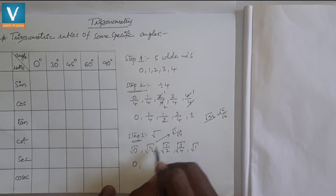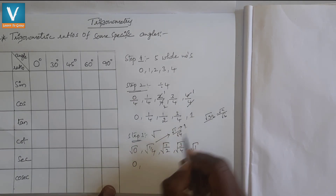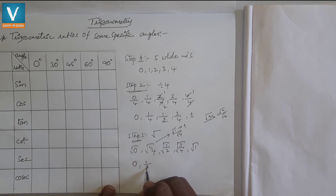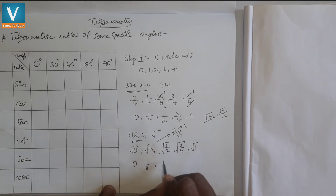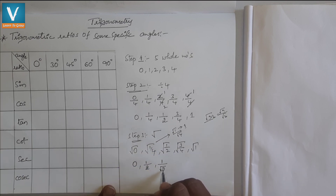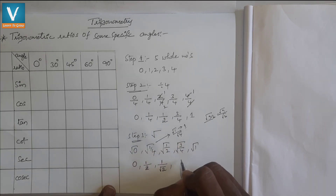So √(1/4) = 1/2. Now √(1/2) = √1/√2. Since √1 = 1 and √2 is irrational, we write it as 1/√2. And √(3/4) = √3/√4 — √3 is irrational so we keep it as is, and √4 = 2, giving √3/2. And √1 = 1.